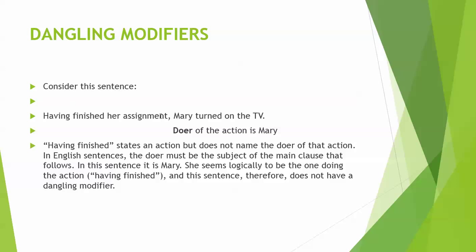Example: 'Having finished her assignment, Mary turned on the TV.' The doer of the action is Mary. Mary turned on the TV. This is a complete sentence, a good sentence. There is no misplaced modifier. Mary is the name of the person that finished her assignment and turned on the TV. It's a logical, proper English sentence.